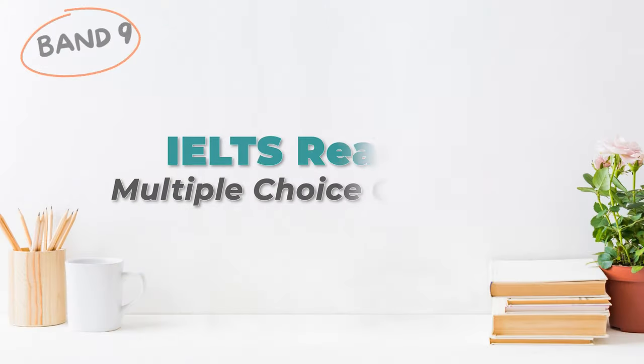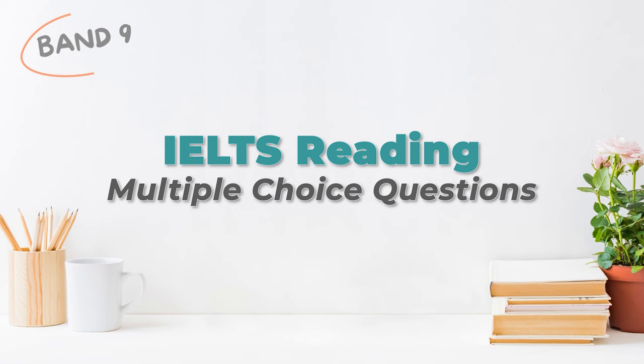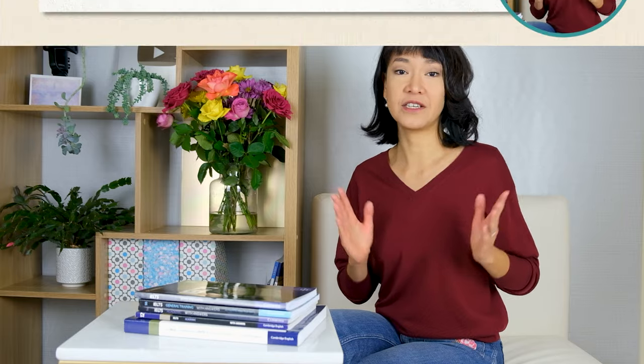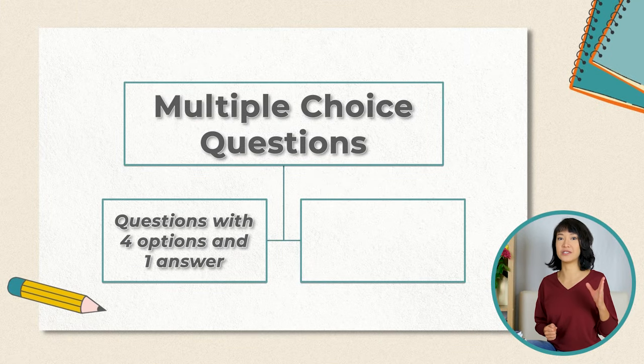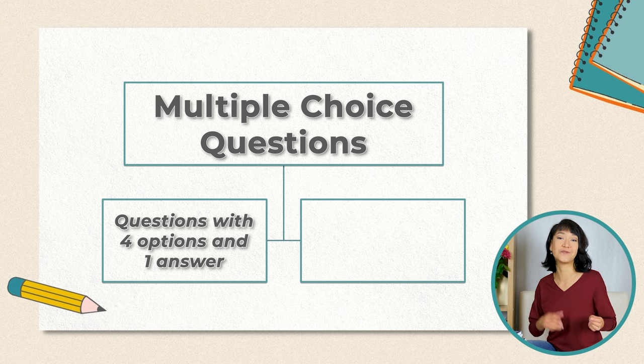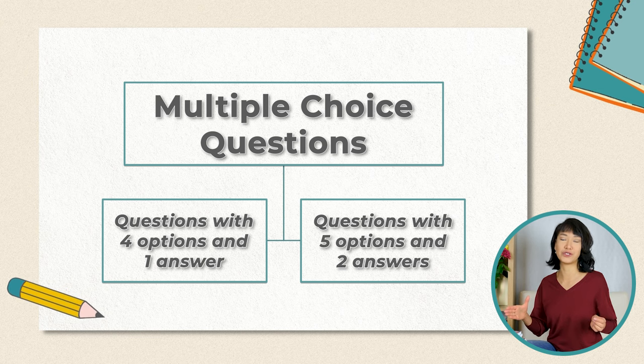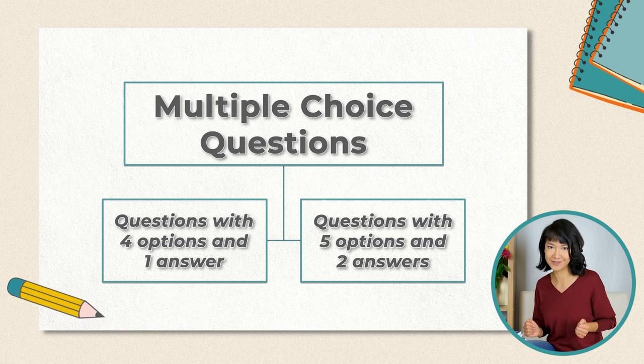Let's get started! You can find multiple choice questions in sections 2 and 3 of the IELTS reading test. There are two types of them: questions with four options and one answer, and questions with five options and two answers.